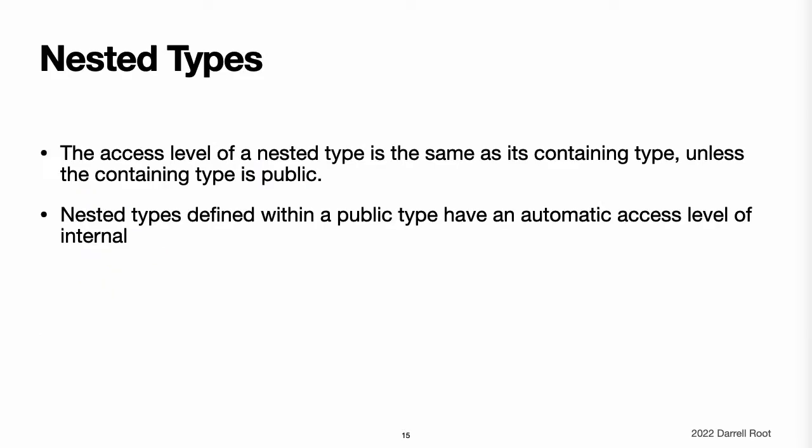Nested types. The access level of a nested type is the same as its containing type, unless the containing type is public. Nested types defined within a public type have an automatic access level of internal. If you want a nested type within a public type to be publicly available, you must explicitly declare the nested type as public.